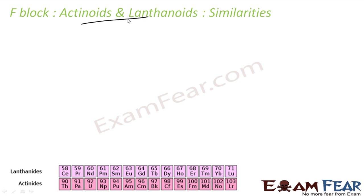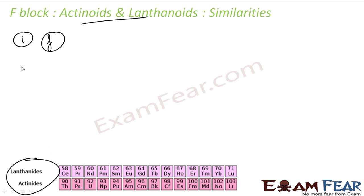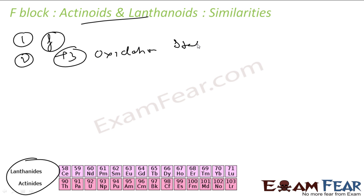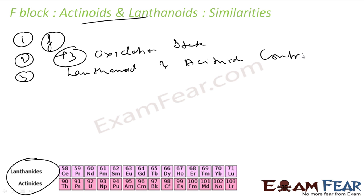If we talk about the similarity between the lanthanides and actinides, both lanthanides and actinides have f orbital — f is the valence orbital. Number two: +3 is the prominent oxidation state in both lanthanides and actinides. Number three: both show contraction — lanthanide contraction and actinide contraction.